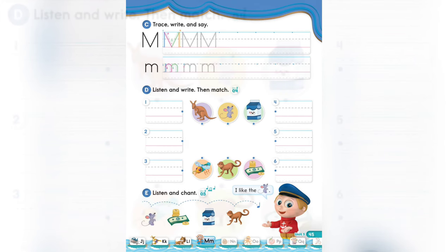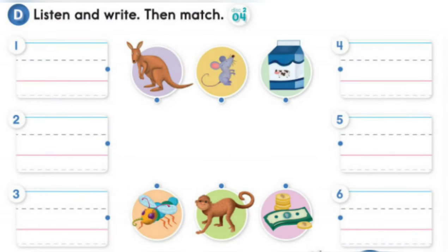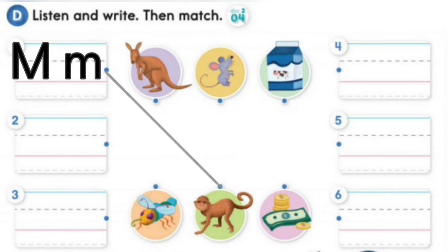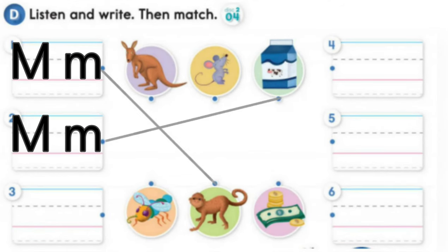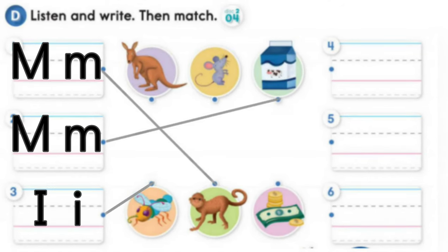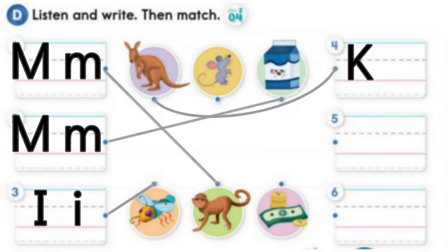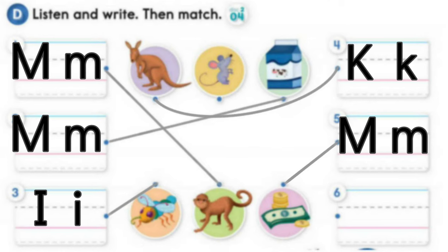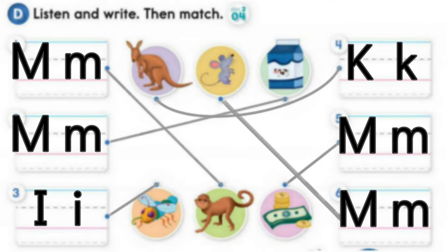Page 45, D: Listen and write, then match. One - Monkey. Two - Milk. Three - Insect. Four - Kangaroo. Five - Money. Six - Mouse.